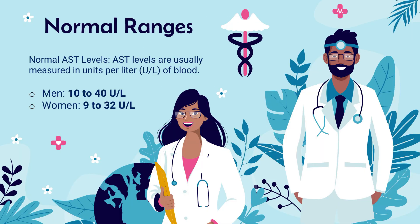So what are the normal ranges of AST in the blood? Normal AST levels are usually measured in units per litre of blood. In men, this range falls between 10 to 40 units per litre. In women, this range is usually from 9 to 32 units per litre.